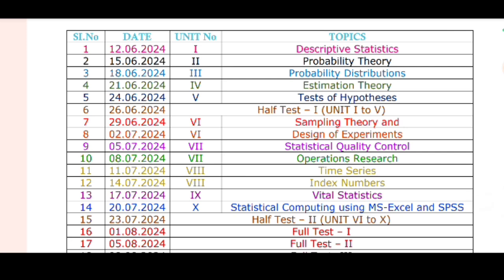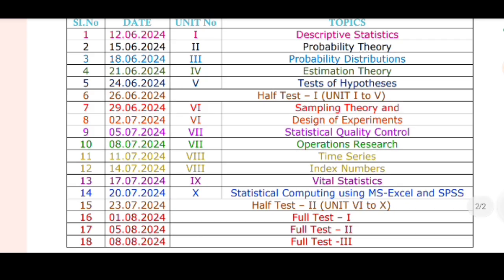June 26, June 29: Sampling. July 2, Unit 6: Design of Experiment. Unit No. 7: SQC — Statistical Quality Control and OR. July 5: SQC. July 8.